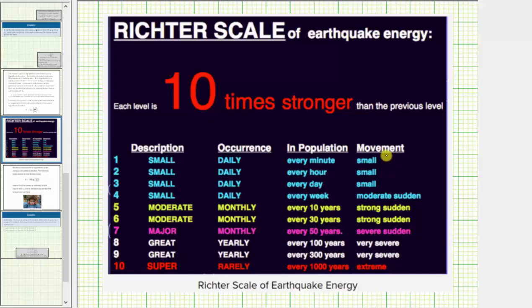Looking at the table below, we have the Richter scale measurement or magnitude on the far left. Then we have a description, how often it occurs, as well as the type of movement to expect. And because each level is 10 times stronger than the previous level,